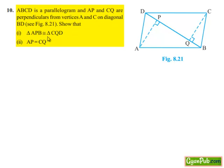triangle APB is congruent to triangle CQD, and AP is equal to CQ. Moving on to the solution,